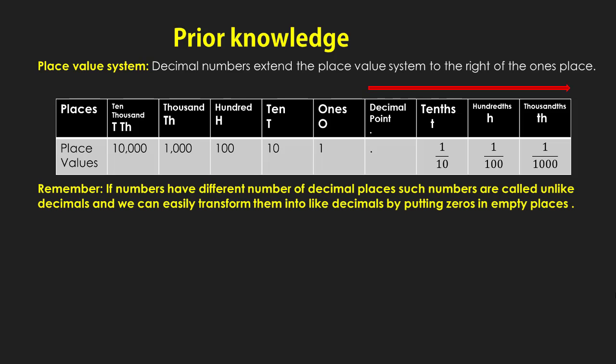Students, remember: if numbers have a different number of decimal places, such numbers are called unlike decimals, and we can easily transform them into like decimals by putting zeros in the empty places.